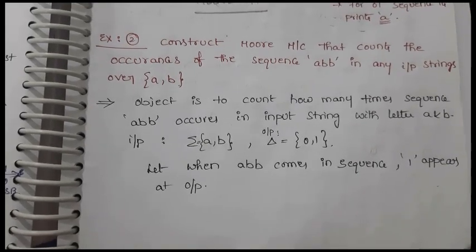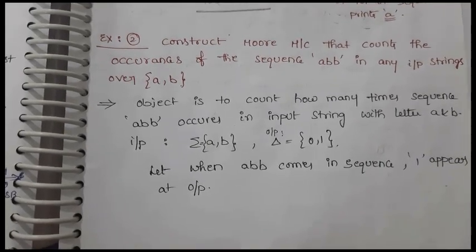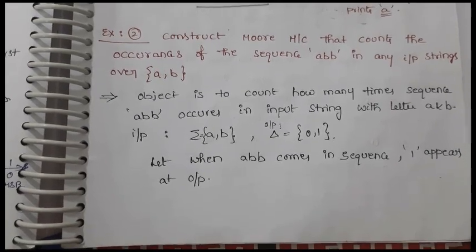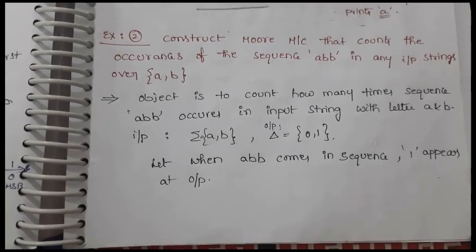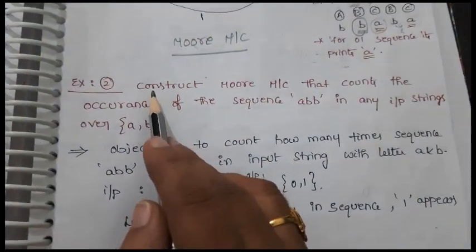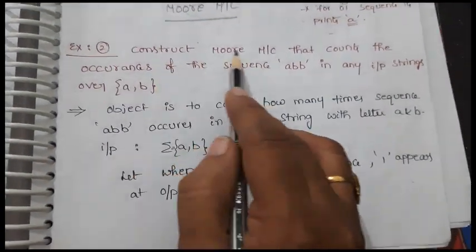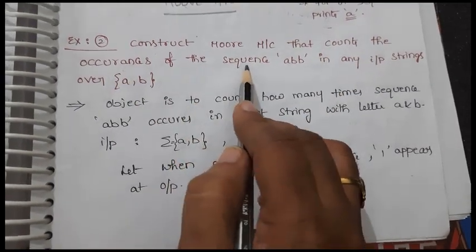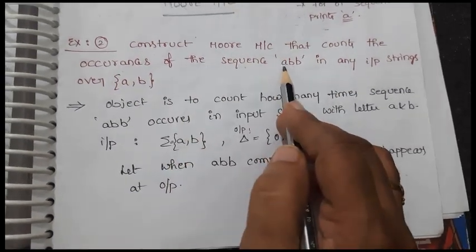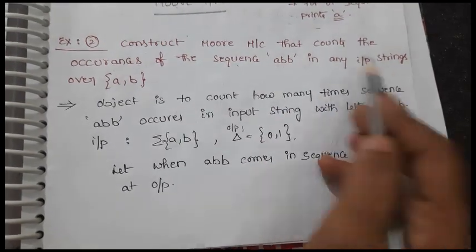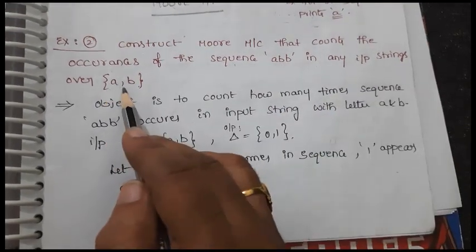Hi everyone. In this session let us discuss one more example on Moore machine. The problem is to construct a Moore machine that counts occurrences of the sequence 'abb' in any input string over {a, b}.